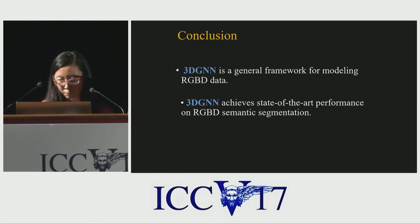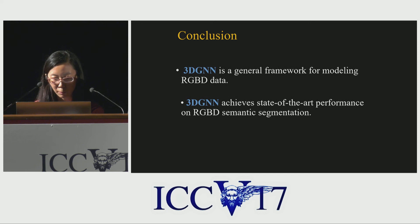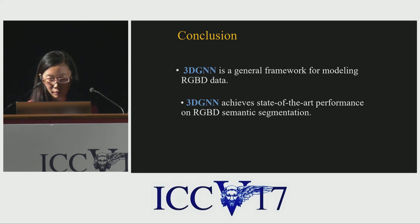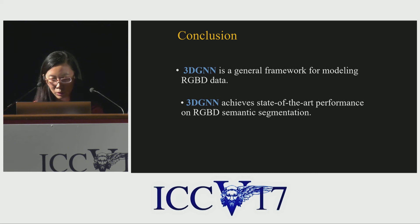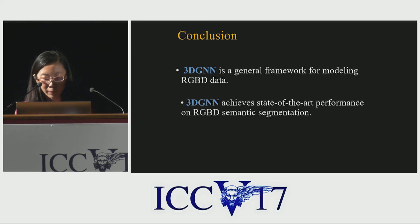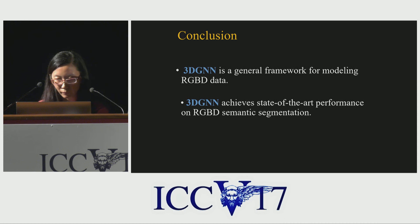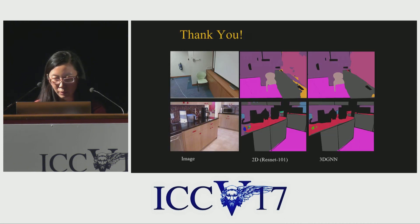To conclude our work, we have proposed 3DGN, which is a general framework for modeling RGB-D data. Moreover, 3DGN achieves much better results on the task of RGB-D semantic segmentation. Our code based on Caffe will be released soon. Thank you, and welcome to my poster.